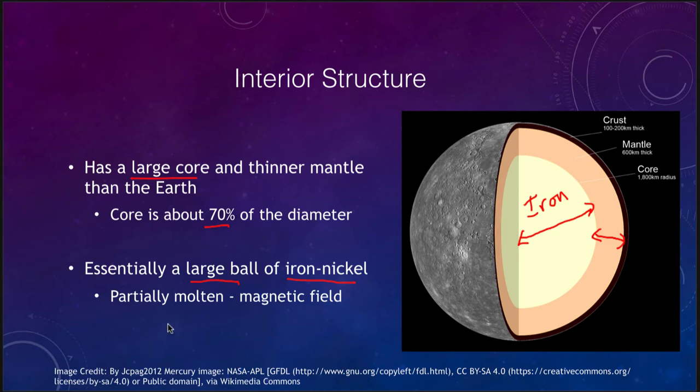We also know that the core is still partially molten, and that's because Mercury does have a weak magnetic field — nowhere near the strength of Earth's, but it does have one. In order to generate a magnetic field, especially in something rotating so slowly, the core must be partially molten.